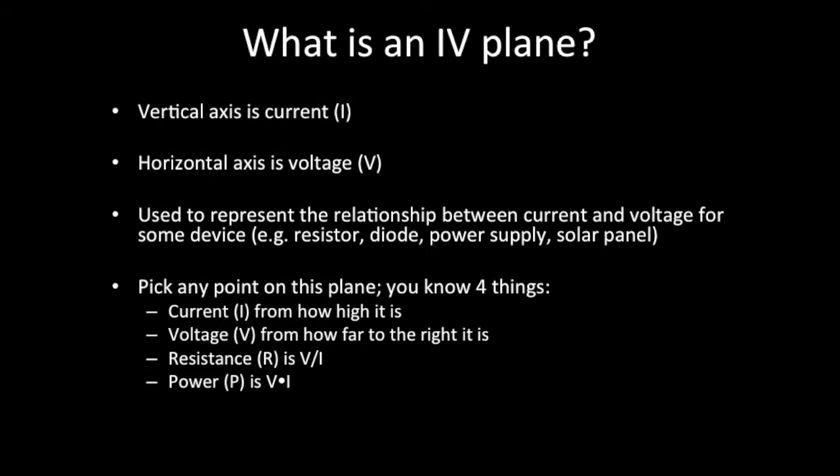So what's an IV plane? The vertical axis is current, the horizontal axis is voltage, and it's used to represent the relationship between current and voltage for some device, like a resistor, a diode, power supply, or solar panel. So you can pick any point on this plane, and you know four things about it. You know the current from how high it is, the voltage from how far to the right it is, resistance because that's V divided by I, and power because that's V times I.